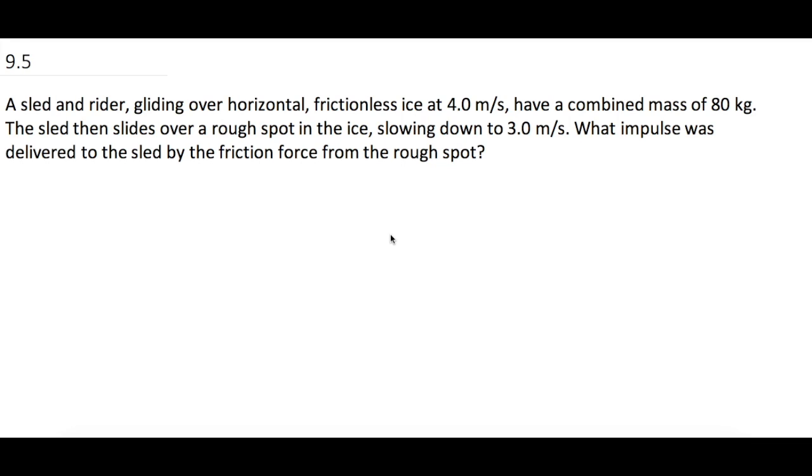A sled and rider gliding over horizontal frictionless ice at 4 meters per second have a combined mass of 80 kilograms. The sled then slides over a rough spot in the ice, slowing down to 3 meters per second. What impulse was delivered to the sled by the friction force from the rough spot?